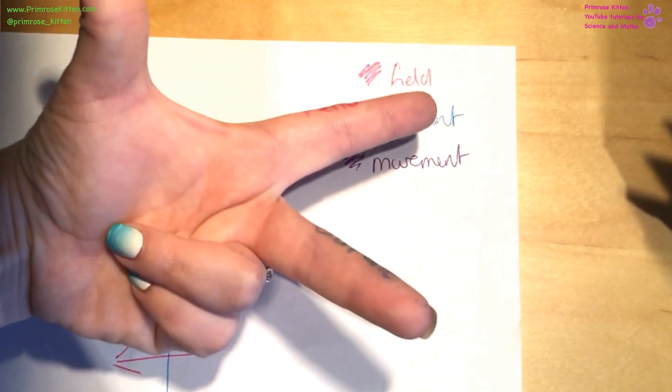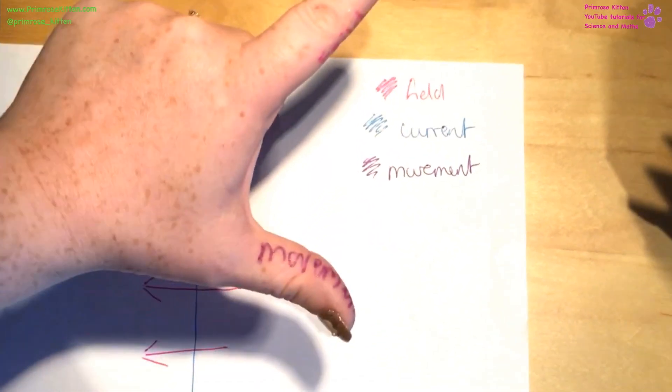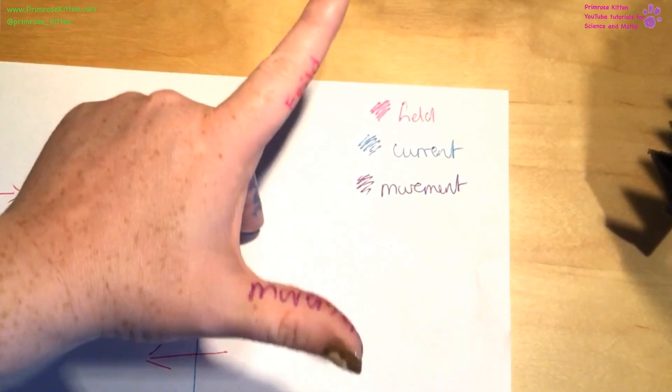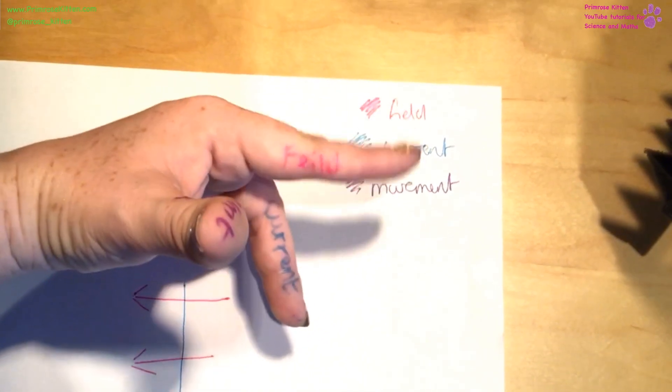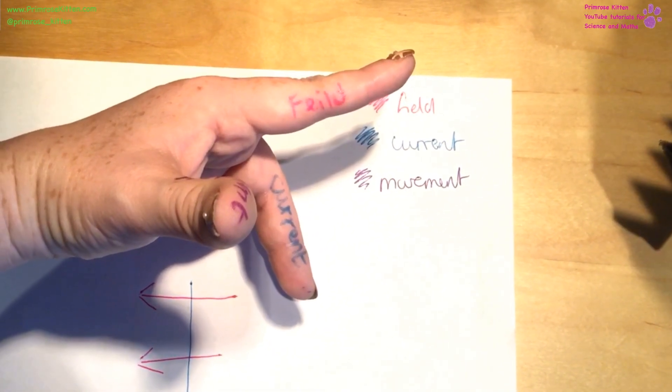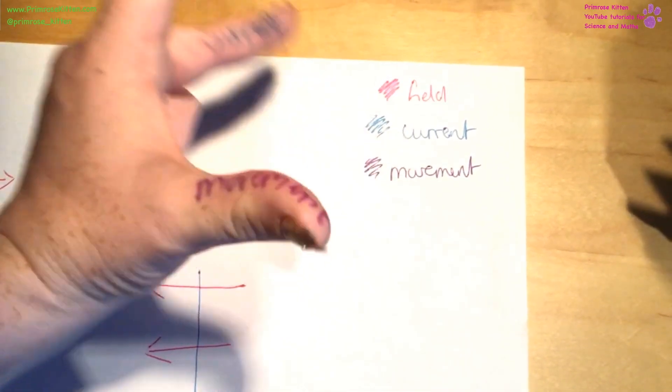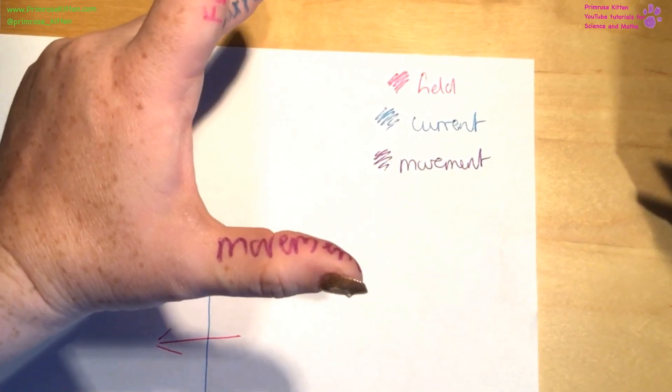For Fleming's left hand rule, we need to make our left hand in this shape here. So your finger pointing out, thumb up, finger out. Your first finger is your magnetic field, this finger here is the current, and then your thumb is the movement of the force.